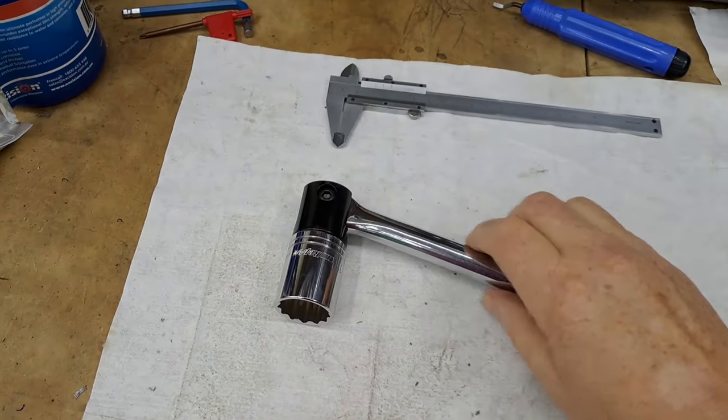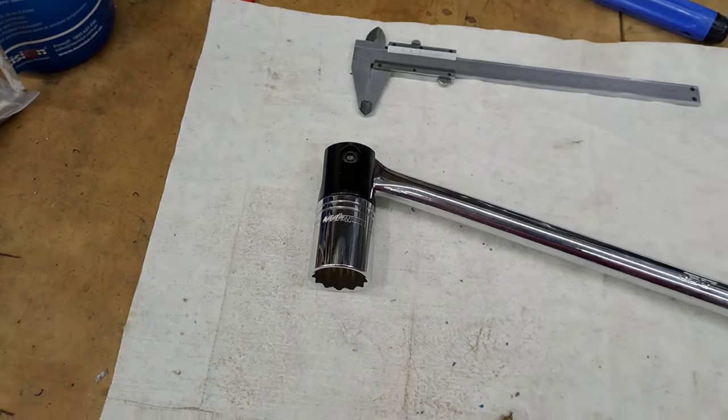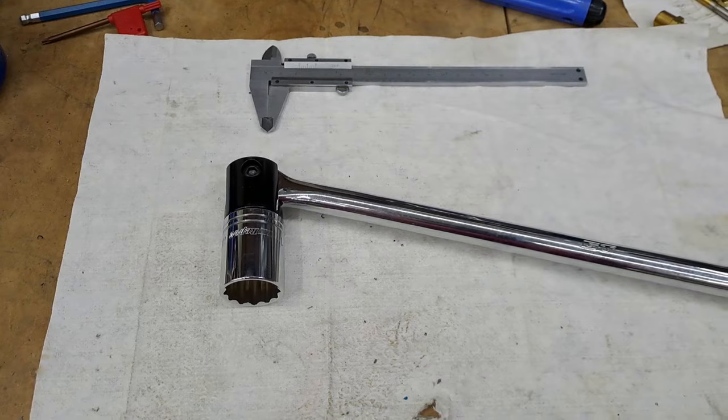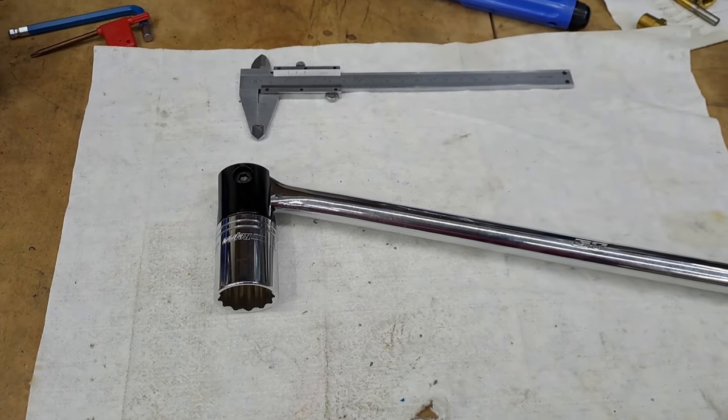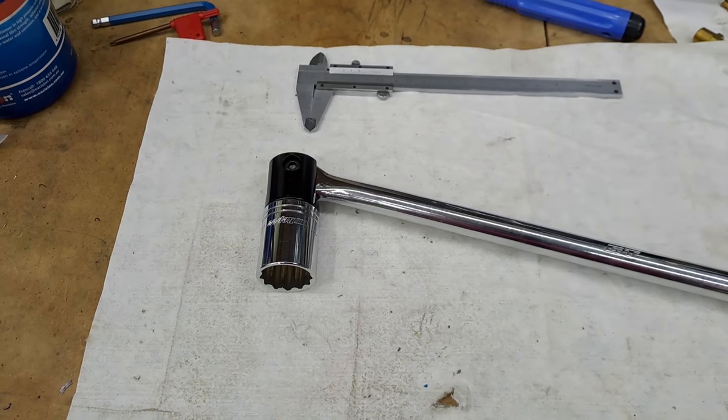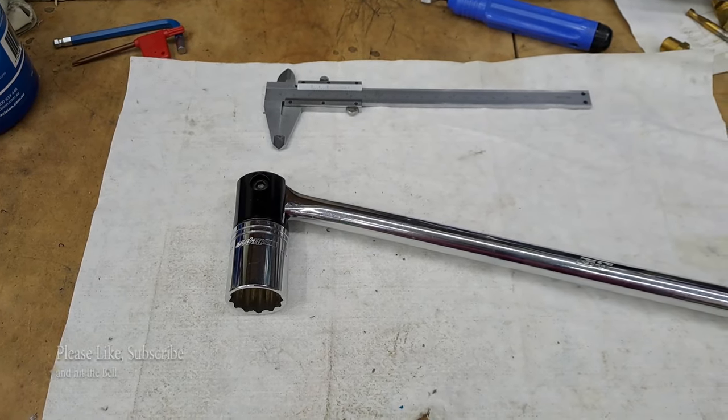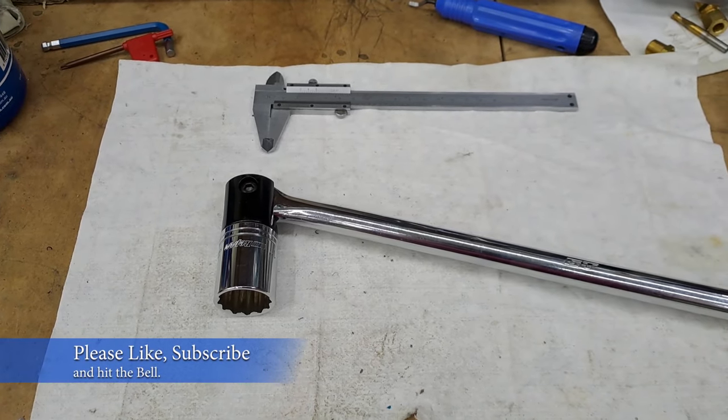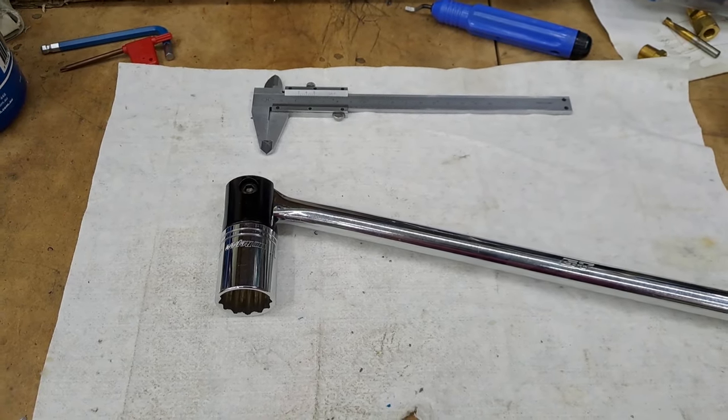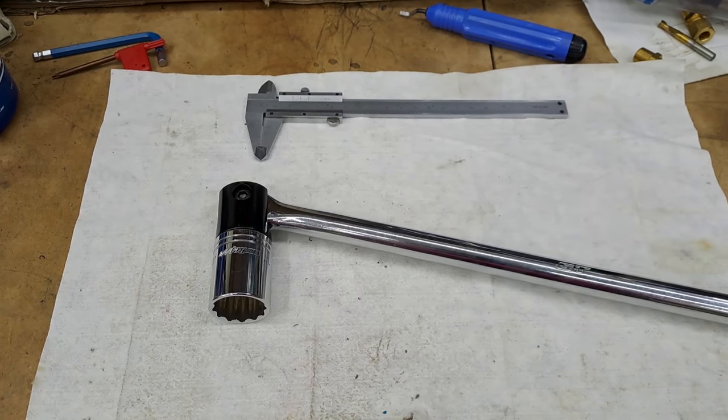Alright guys, so today here on the bench I have a rather nice 24 inch breaker bar. Now you might be asking, what's that got to do with model engineering? Well, there's a Facebook group I'm a member of that has recently been talking about cold riveting. Now cold riveting is just the process of forming a rivet to hold two or more bits of metal together.